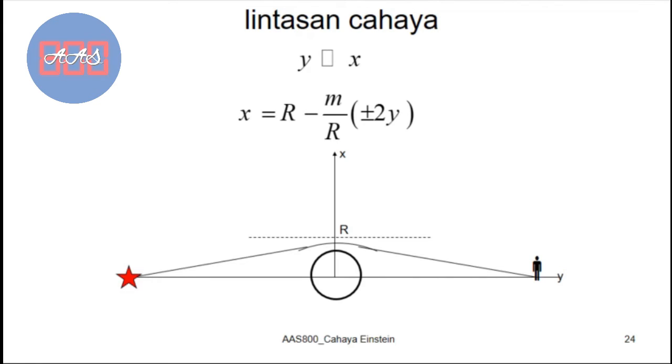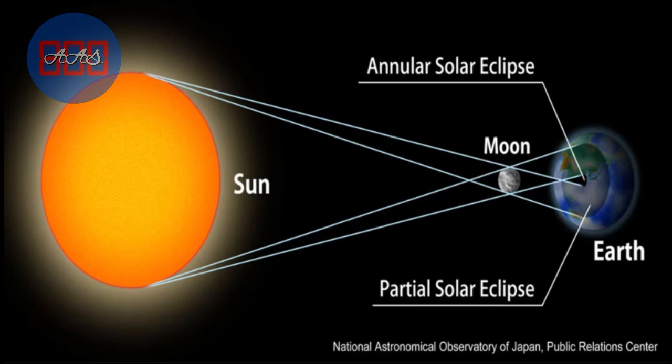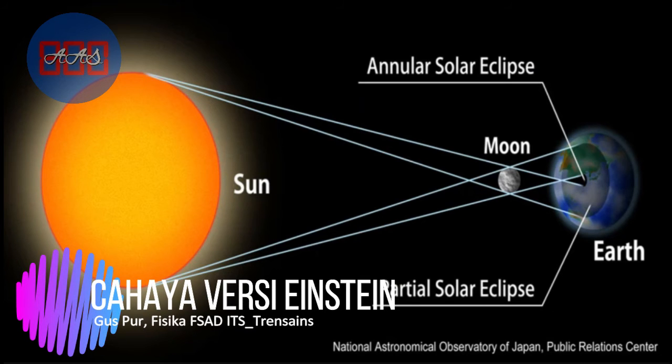Theory remains theory, the truth of theory must be tested, and the final judge of a theory is the laboratory, is nature. So how to prove that light is curved? The awaited moment is a total solar eclipse.